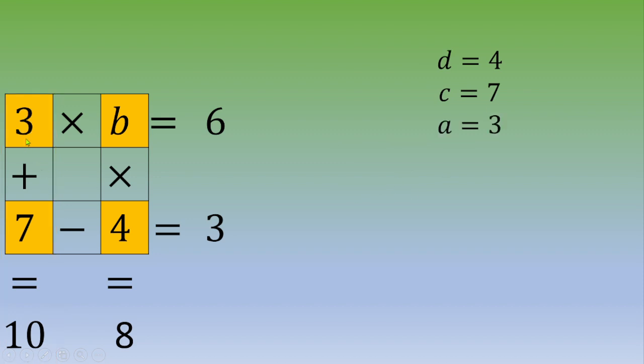So, you plug 3 in this table. Now, you focus on row number 1. 3 times B equals 6. So, B is 2. And you can check that 2 times 4 equals 8.